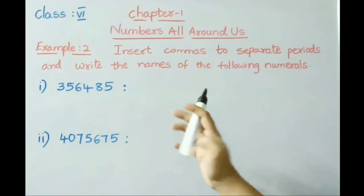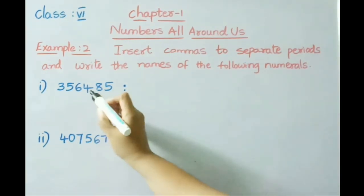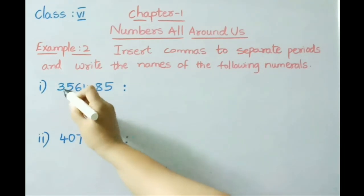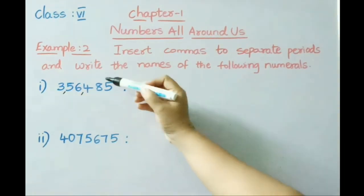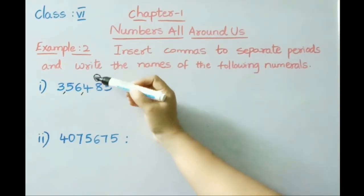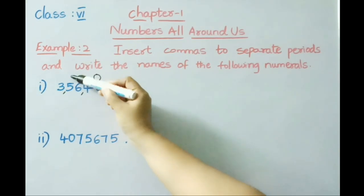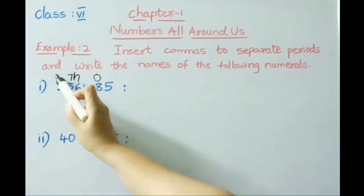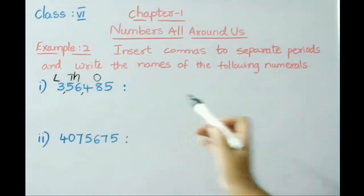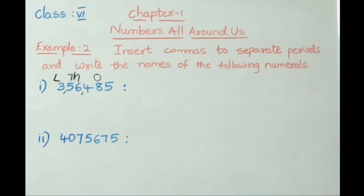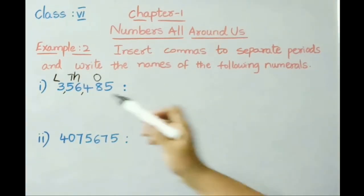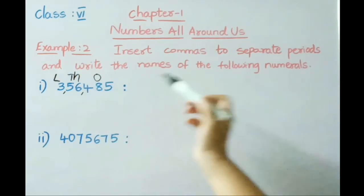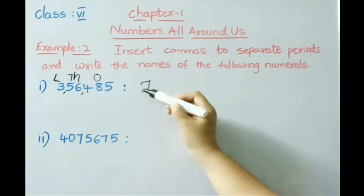From right to left in the Indian system, first three digits are separated with a comma, then after that two digits are separated. The first three digits come under the ones period, next is the thousands period, then the lakhs period. Now let us write the number name: 3 lakhs, 56,485.